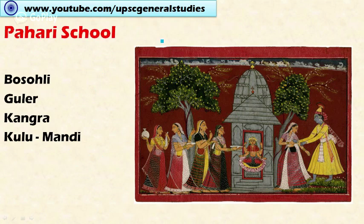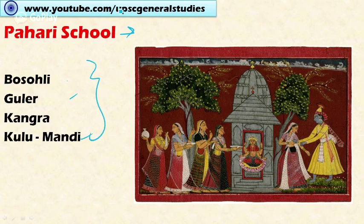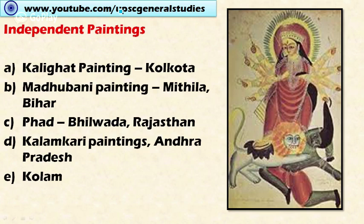The Pahari school is present in Himachal Pradesh and Jammu and Kashmir — the northern hill states of India. It is also characterized by the life history of Sri Krishna and other romantic scenes. This school has different branches: Basohli, Guler, Kashmir, Kangra, Kullu, and Mandi.